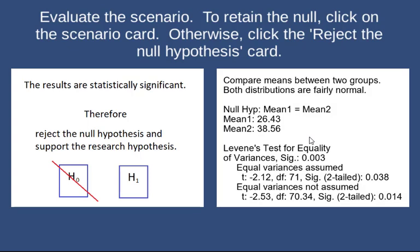Here's another two-tail test. The null hypothesis says the mean for group 1 equals the mean for group 2. The evidence shows group 1 mean is 26.43 and group 2 mean is 38.56. Levene's test significance is 0.003, so we reject the idea of equal variances and look under equal variances not assumed. The t-test is negative 2.53, degrees of freedom is 70.34, and significance two-tail is 0.014, which is less than the alpha level of 0.05. So we will reject the null hypothesis.